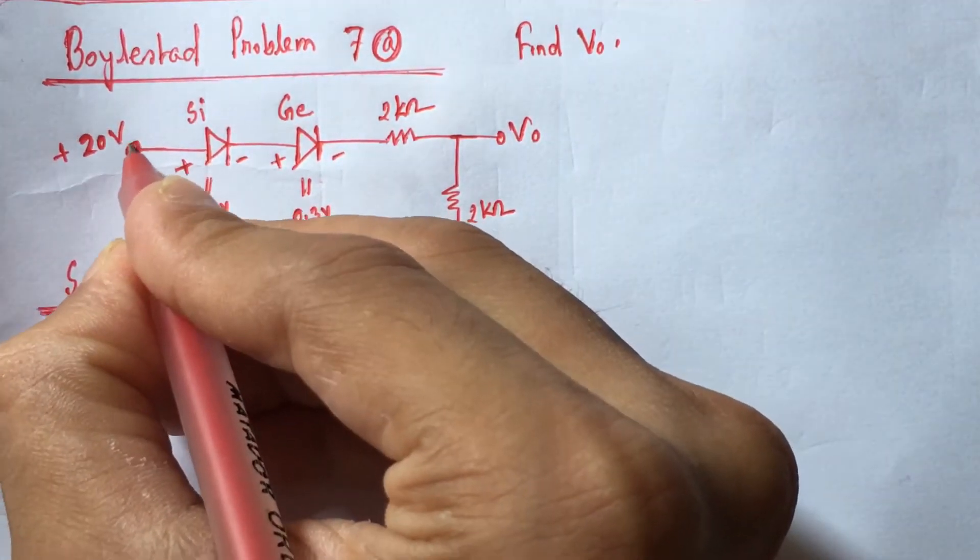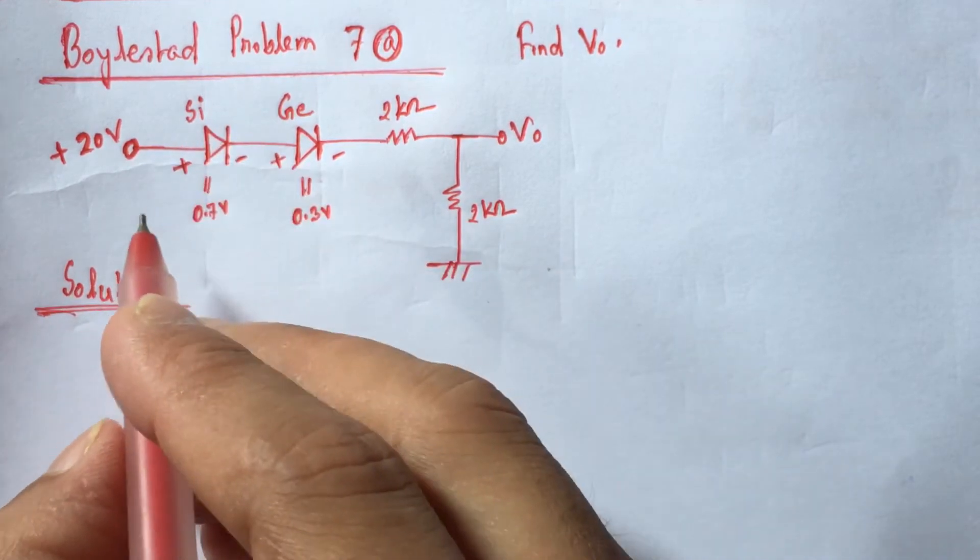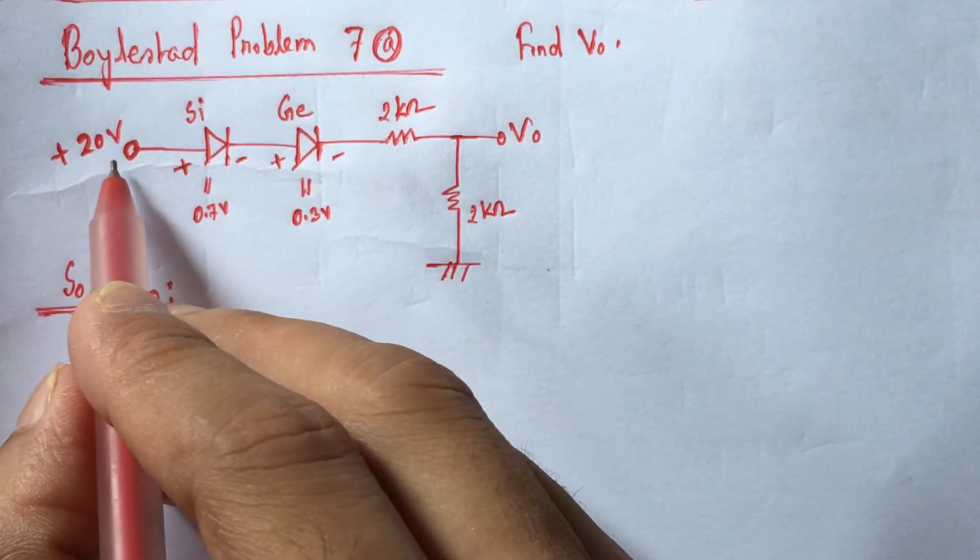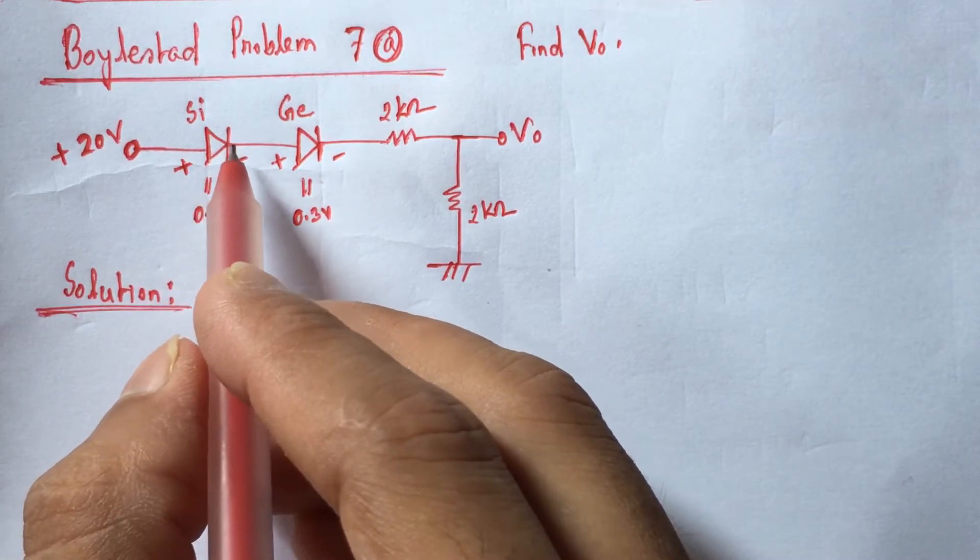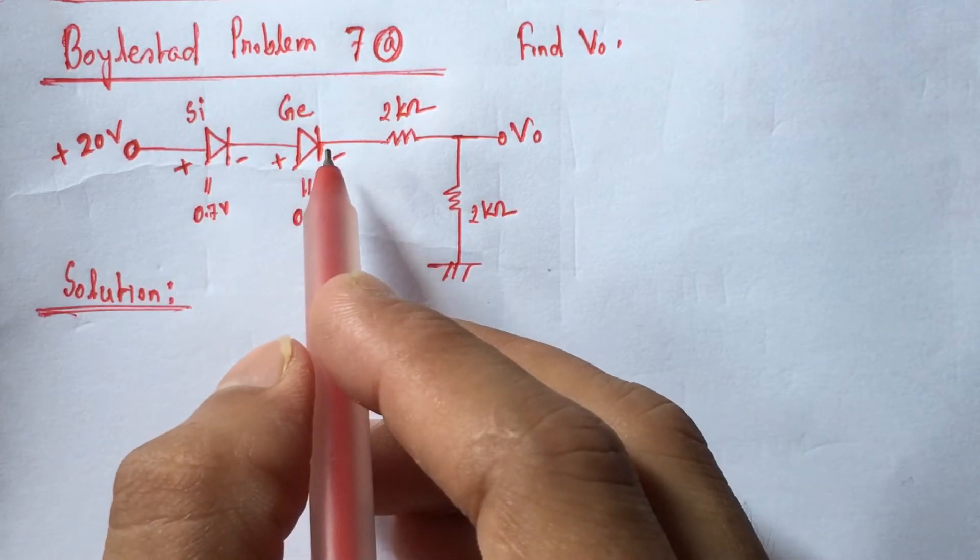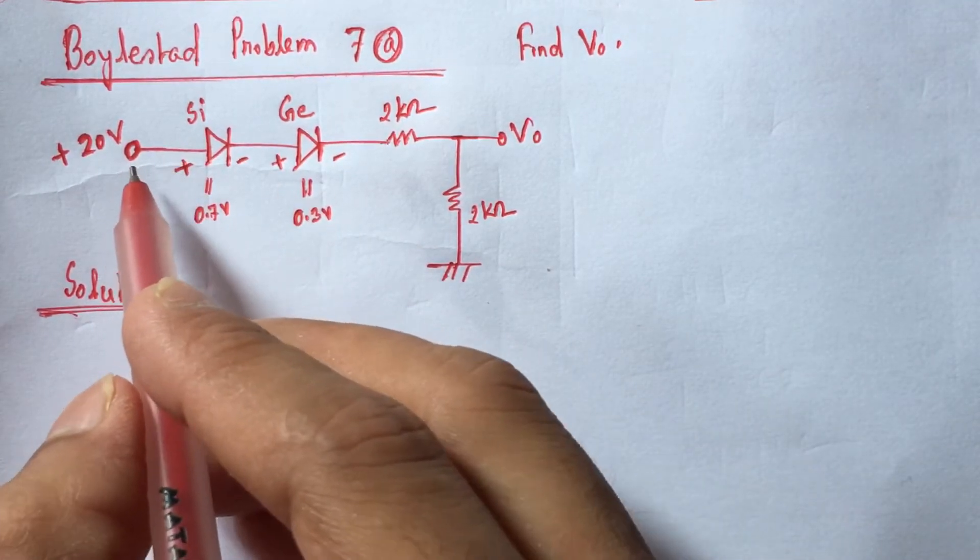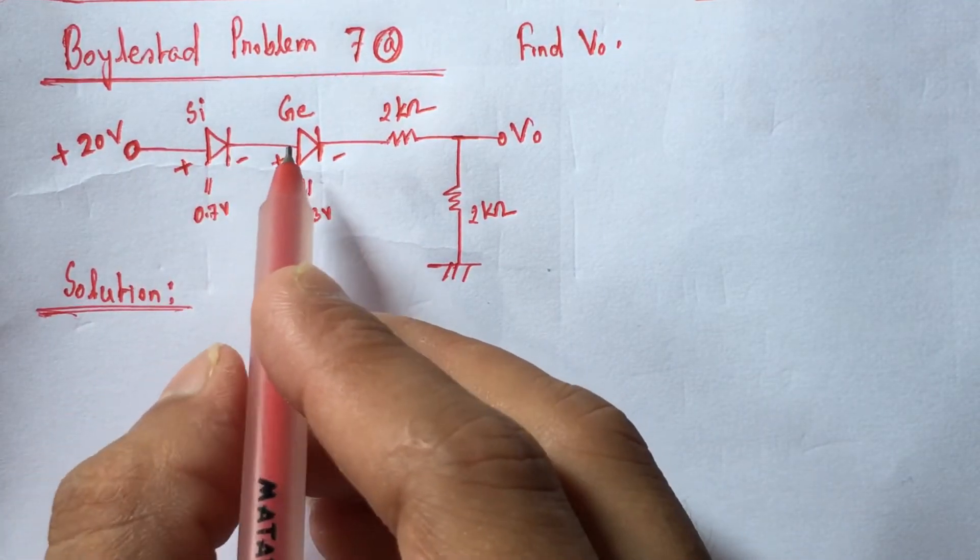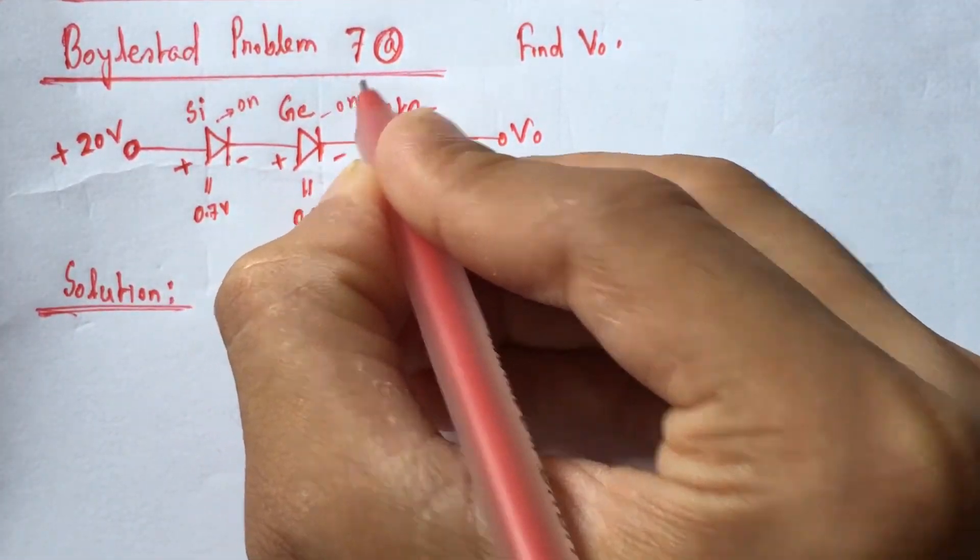Now we see that the biasing voltage is 20 volts positive. So this 20 volt biasing voltage is biasing both the silicon and germanium diodes forward. Since they are forward biased, both diodes will remain on.